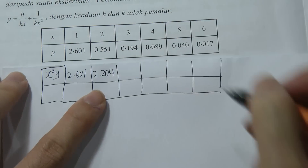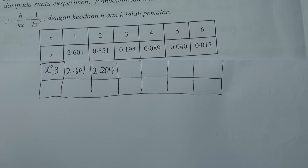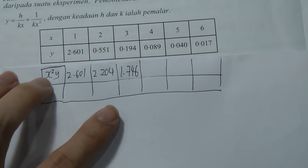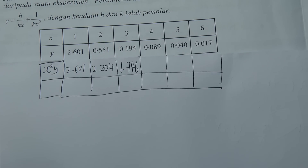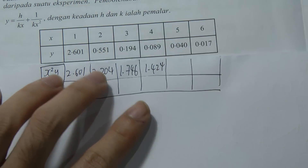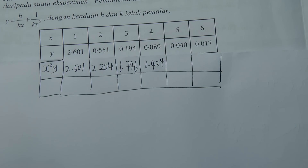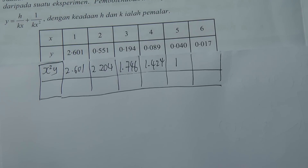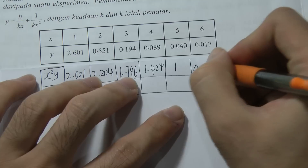Continuing the table: 3 squared is 9, and 9×0.194 = 1.746. Then 4 squared is 16, and 16×0.089 = 1.424. Then 5 squared is 25, and 25×0.04 = 1. Finally, 6 squared is 36, and 36×0.017 = 0.612.